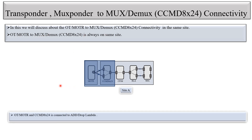The OTM/OTR and CCMD8 Cross 24 is connected to AIRDROP lambda, and the CCMD8 Cross 24 is used in a series configuration. Let's see how the physical connection is made — which port of the CCMD8 Cross 24 connects to which port of the MOTR or transponder.